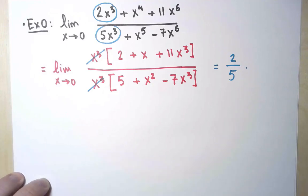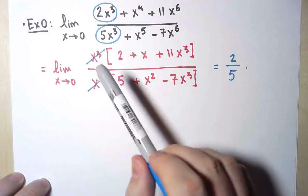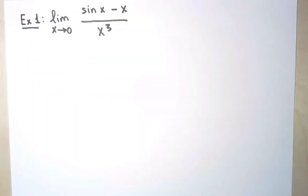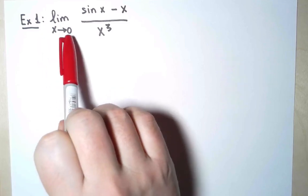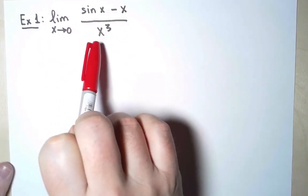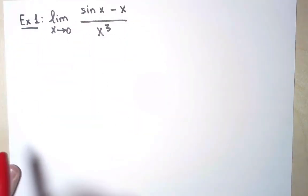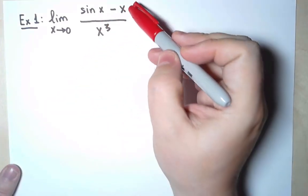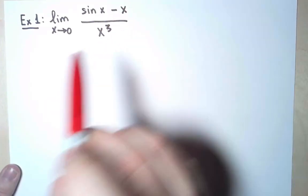Now, polynomials are the easiest ones. How can I use the same idea for other functions? My first real example is this: limit as x approaches 0 of (sin x minus x) over x³. We saw how easy the previous example was, but that's because the top and bottom were both polynomials. Unfortunately, sin is not a polynomial.